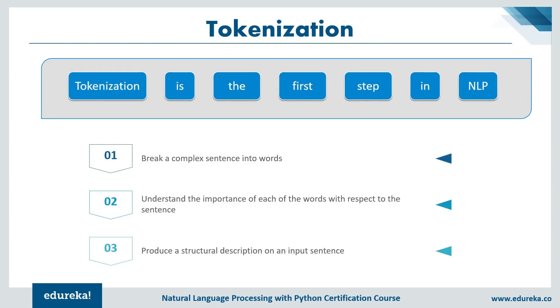We have six and seven tokens here. NLTK also allows you to tokenize phrases containing more than one word. Let's go ahead and see how we can implement tokenization using NLTK.